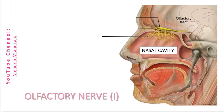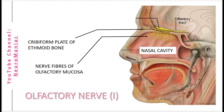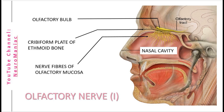First up, the olfactory nerve. This nerve originates from the olfactory mucosa found in the upper nasal cavity shown here. It then projects into the cranial cavity via the cribriform plate of the ethmoid bone, directly to the olfactory bulb. These nerve fibres then form the olfactory tract and travel to the olfactory cortex.